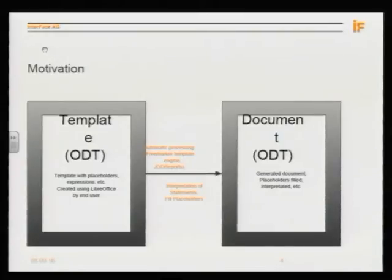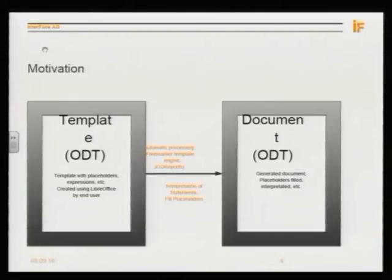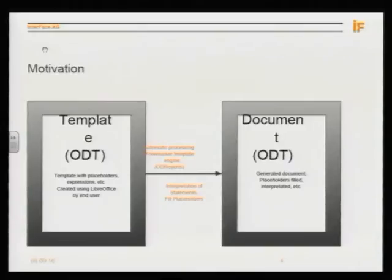What is the motivation? We have a customer project with a document generation system. They are using LibreOffice for creation of ODT files as templates. They use special languages and an engine called FreeMarker and JockReports — a Java framework — for generation of documents. It's essentially a template system where you can do ifs, loops, replace placeholders, view data, and so on, creating documents from templates.